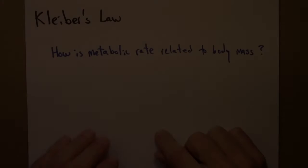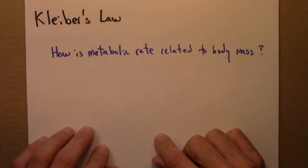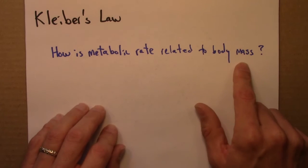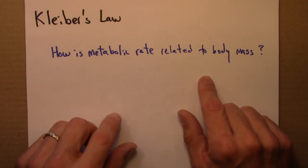Let's get started by looking at Kleiber's Law. Our starting point in this unit will be to think about Kleiber's Law. Kleiber's Law is a statement about how metabolic rate is related to body mass. Let me say a little bit about this and then we'll look at some data.